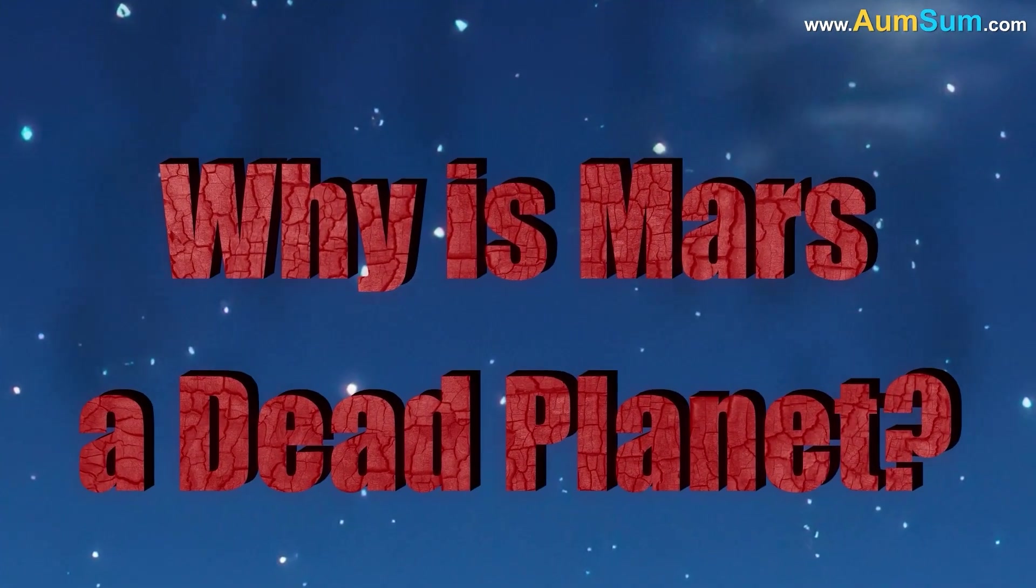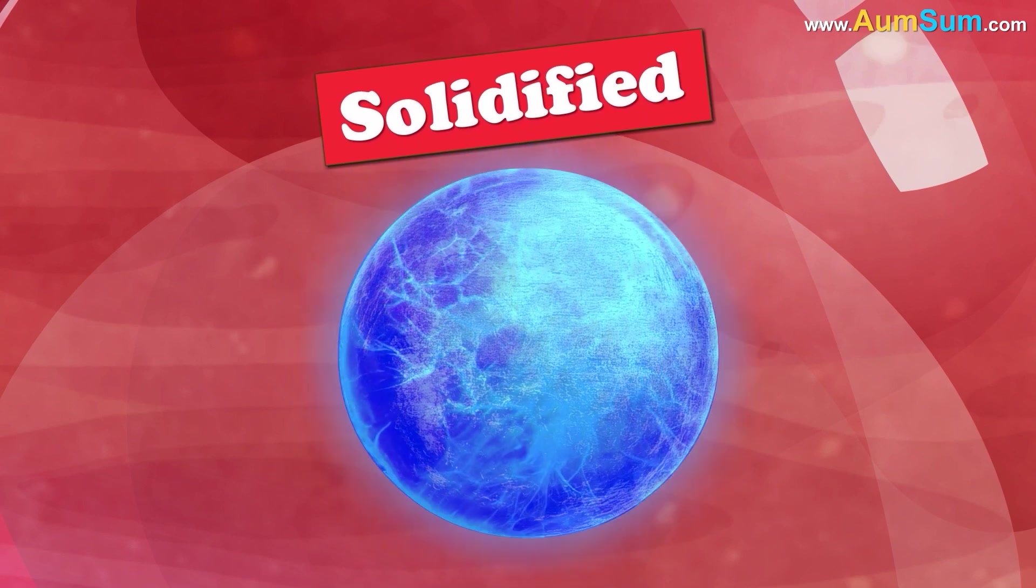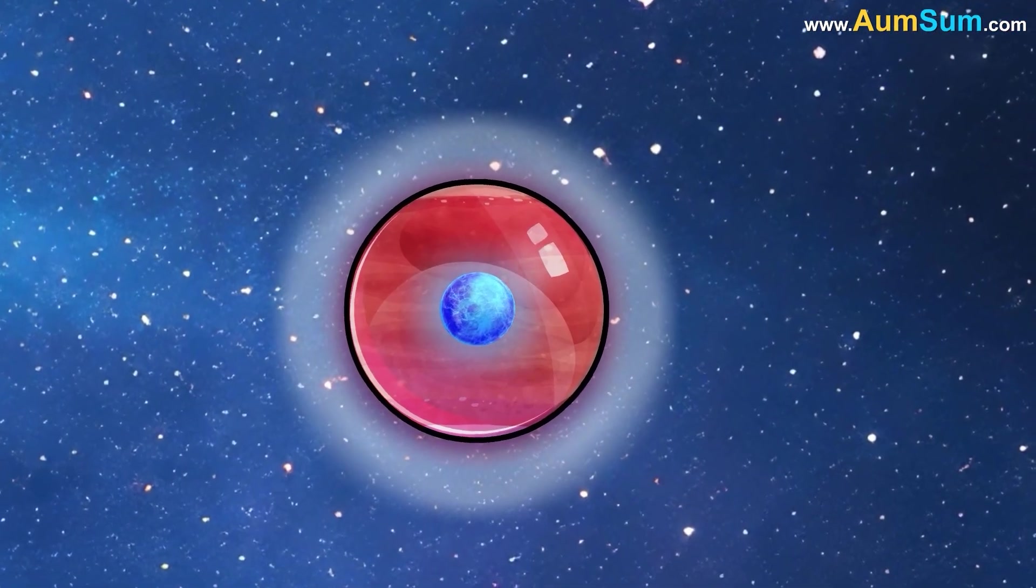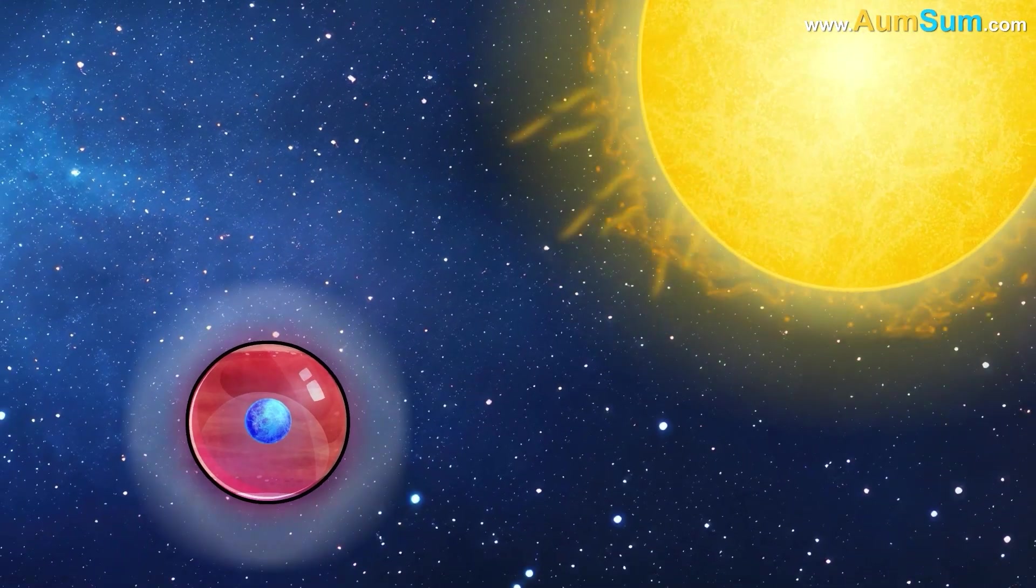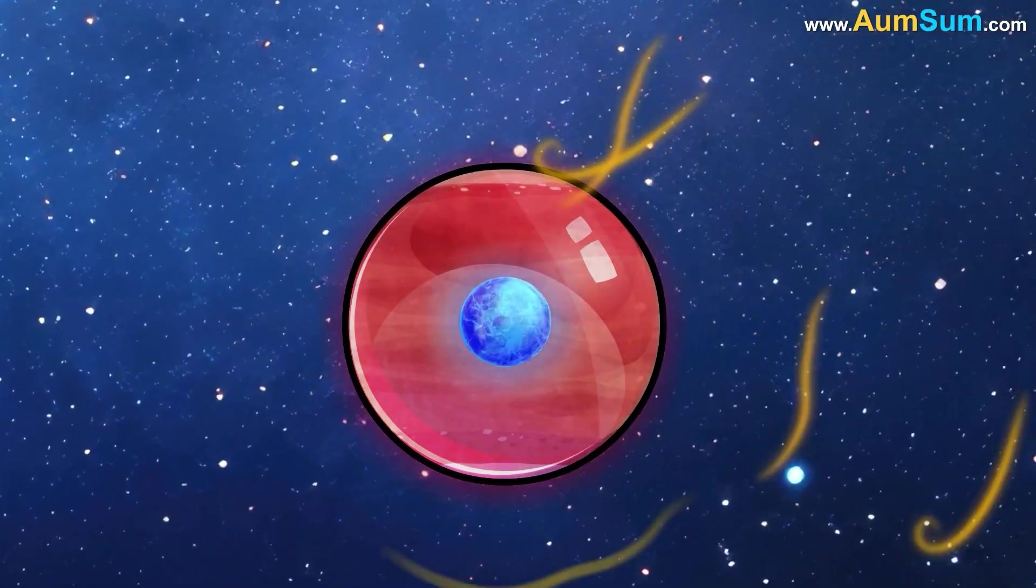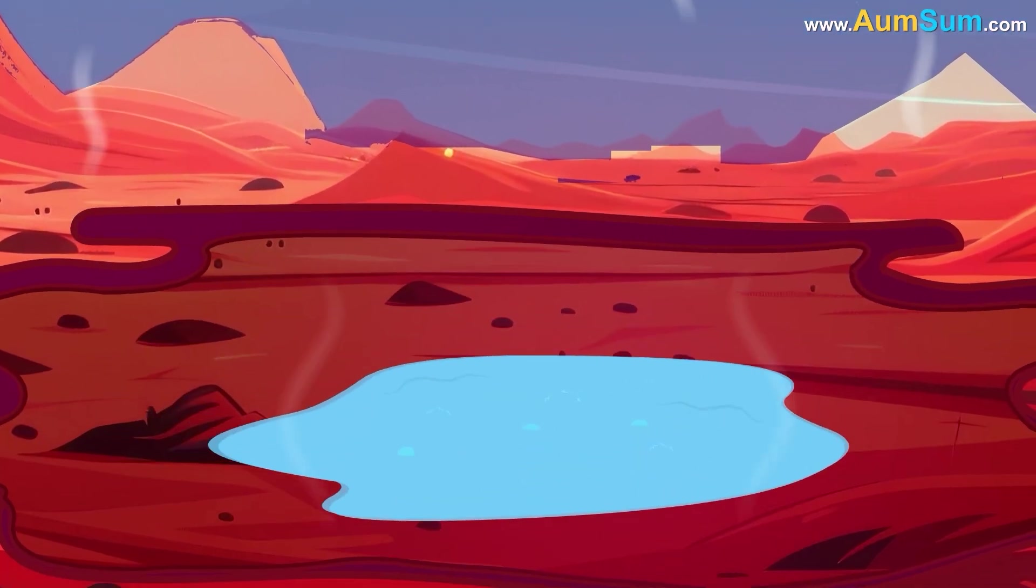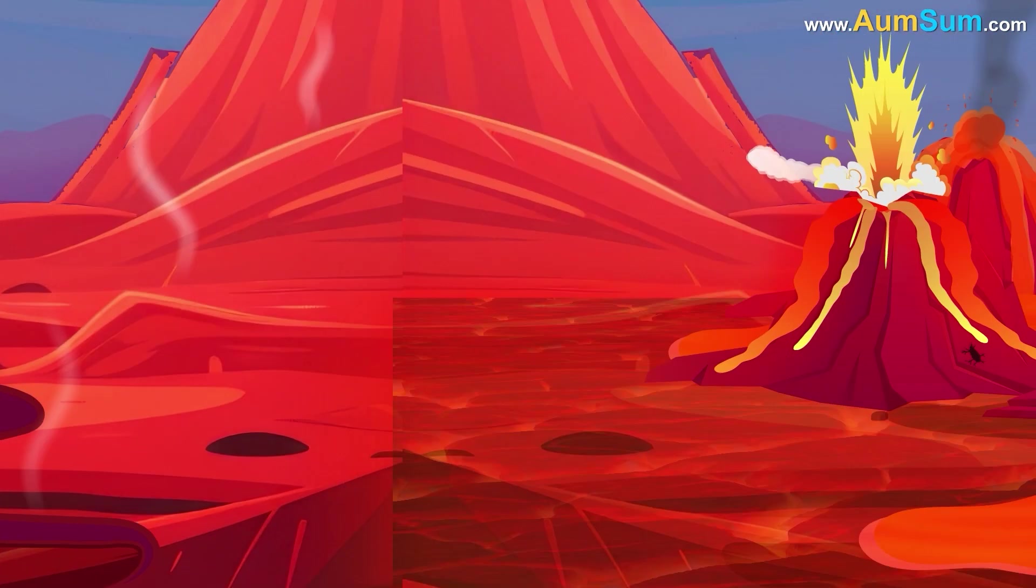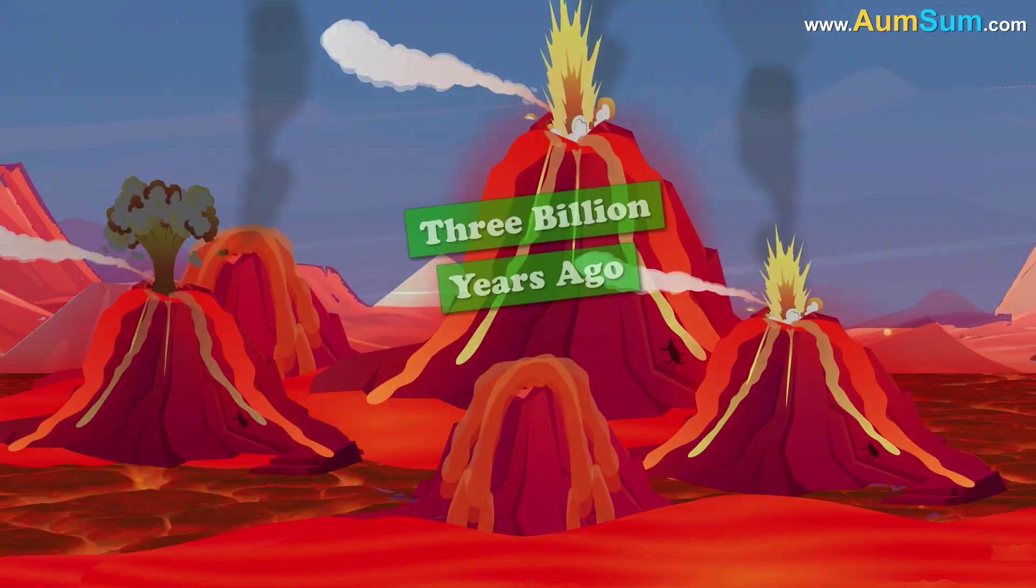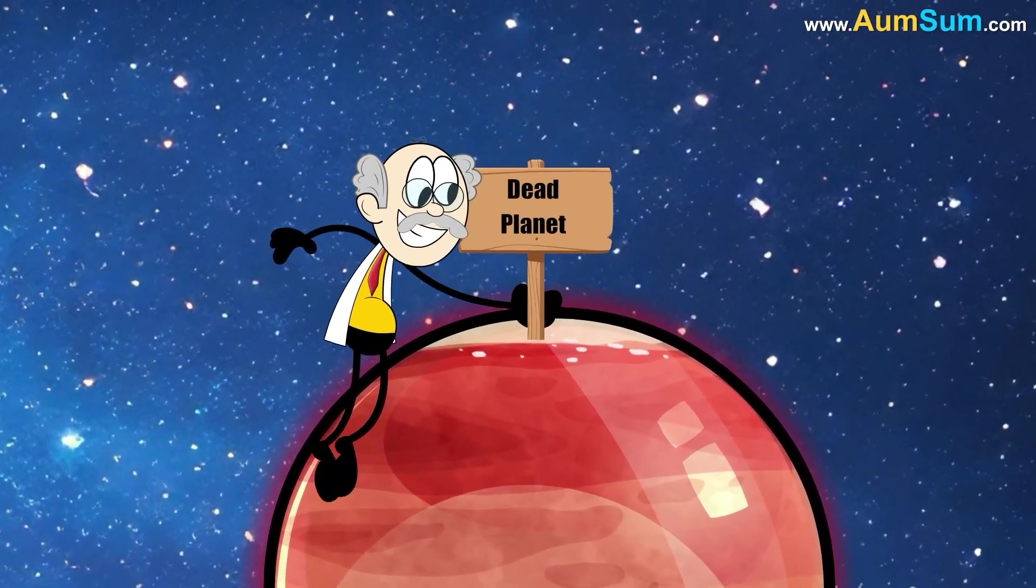Why is Mars a dead planet? Firstly, Mars' core cooled and solidified too quickly, causing it to lose its magnetic field. Secondly, without a magnetic field, the solar wind stripped away Mars' atmosphere. Thirdly, without an atmosphere, the water on Mars' surface completely evaporated. Lastly, as most of Mars' volcanic and tectonic activity occurred over 3 billion years ago, it is considered a dead planet now.